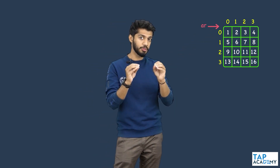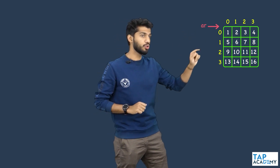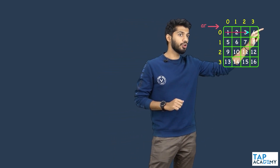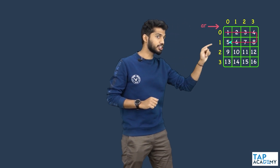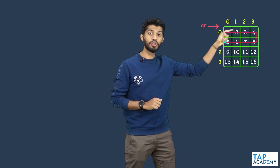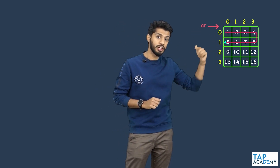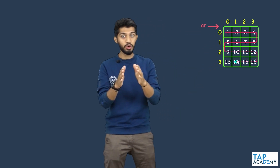What does it mean? Assume that this is the matrix given to you. All you need to do is print 1, 2, 3, 4, then after that 8, 7, 6, 5. So you should not print only from left to right — first row you print from left to right, then right to left, then left to right, then right to left. That is what you have to do.